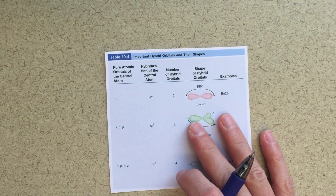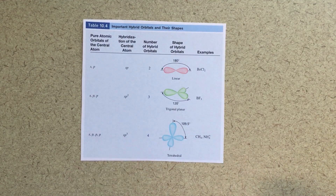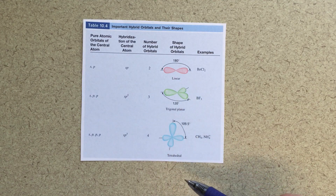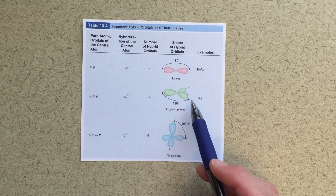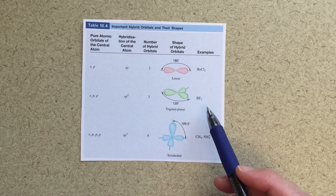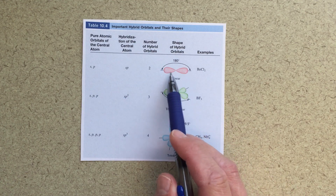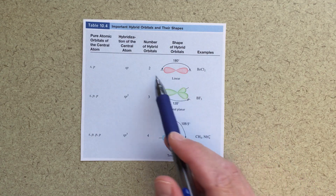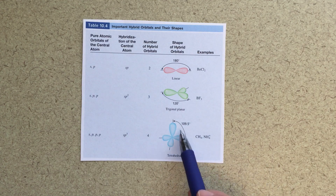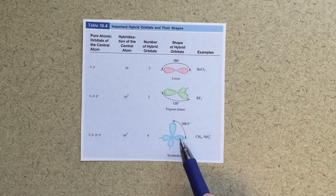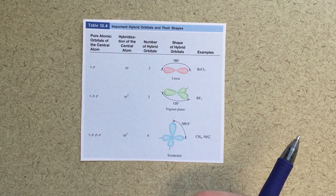We've looked at this table before. It outlines sp, sp2, and sp3 hybridization with the corresponding shapes. If I've got a trigonal planar arrangement, that's sp2 hybridized — BF3 is an example. Linear is sp hybridized — BeCl2 is our example there. sp3 hybridized is the one we'll interact with most, with examples like CH4 and NH4+: a tetrahedral arrangement at 109.5 degrees around the central atom.